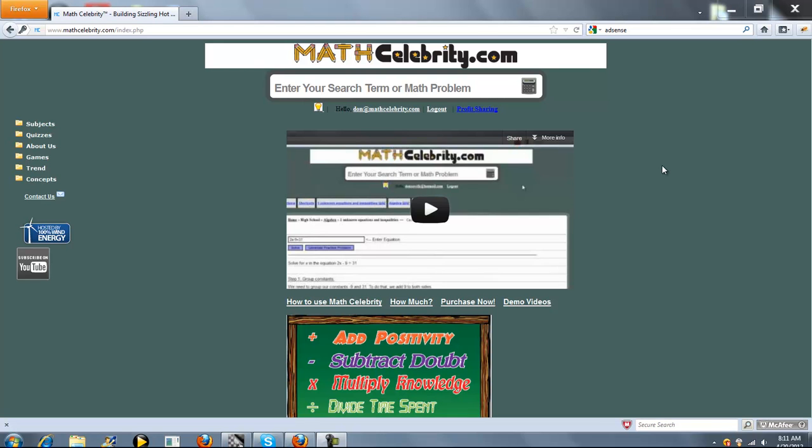This is the Rule of 72 calculator for MathCelebrity.com. To get there, you just type the simple statement 'Rule of 72' and then enter your interest rate.